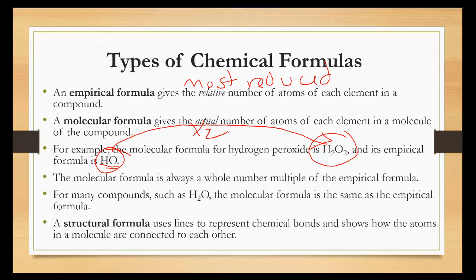Many compounds, such as H2O, have the molecular formula the same as the empirical formula. The structural formula uses lines to represent chemical bonds to show how the atoms in a molecule connect to each other. And at the end of this tutorial, we will show a picture of each of them so you can compare them side by side.